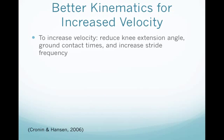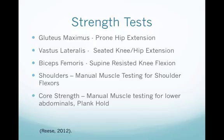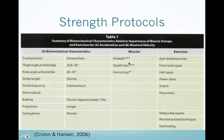The greatest muscle firing during resisted acceleration is in the quadriceps, gluteals, hamstrings, and calves. We can test the muscles for strength discrepancies using manual muscle testing. For the gluteus maximus, performing a prone hip extension can reveal if the glutes fail to fire. Core strength is also incredibly important in resisted sprinting to maintain a rigid spine. Manual muscle testing for the lower abdominals and a plank hold can assess core strength. Protocols to address strength discrepancies include strengthening the gluteals, quadriceps, and hamstrings through gym-based exercises such as front hack squats, power cleans, and Olympic lifts, according to Cronin and Hansen.